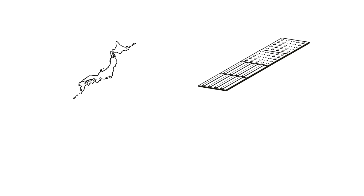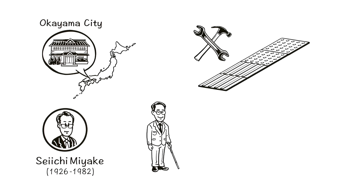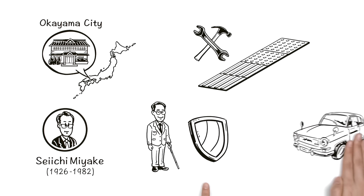It all started in Japan. Seiichi Miyake, a hotel owner in Okayama City, had a close friend who was visually impaired. He developed these tiles to keep his friend safe on the streets.